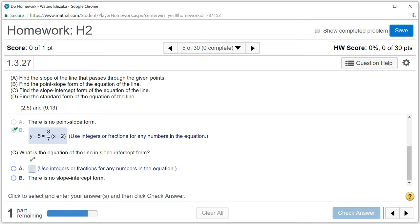Let's look at part C. We want to find the equation in slope-intercept form, so we just have to convert it. First thing I would do is distribute 8 over 7 to both terms. You will get 8 over 7x minus 16 over 7.